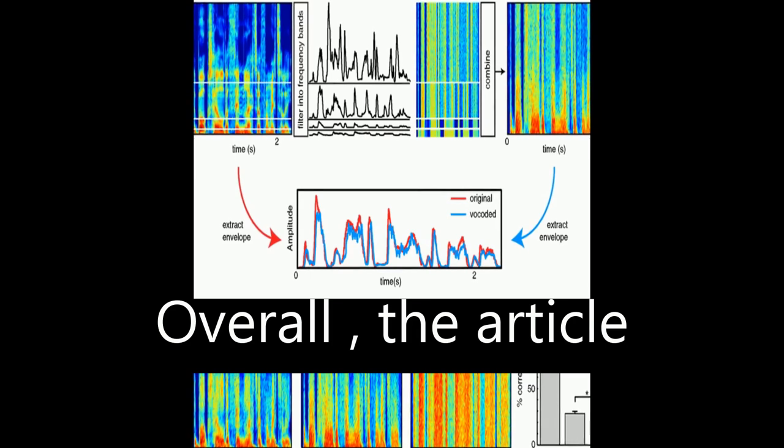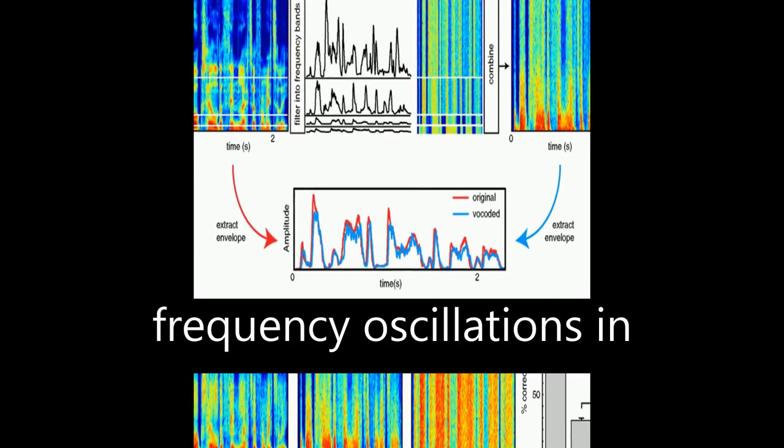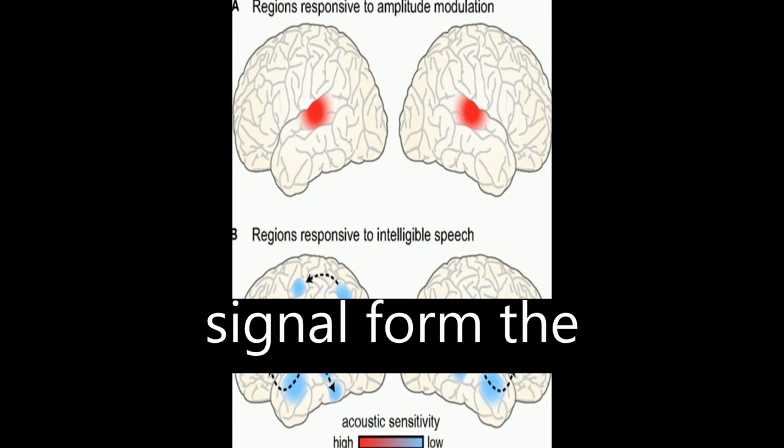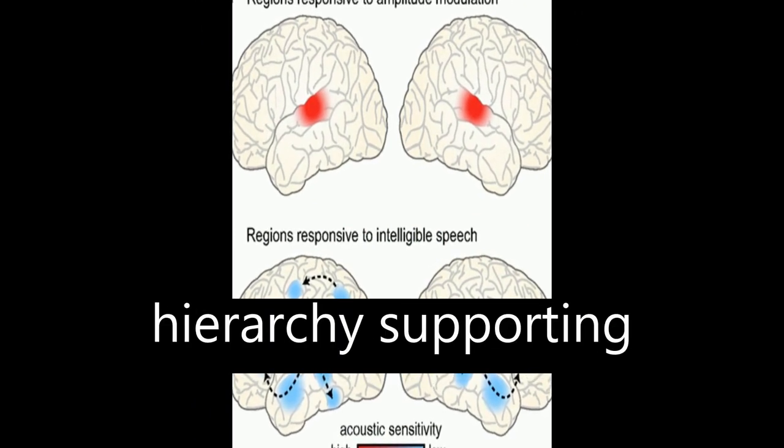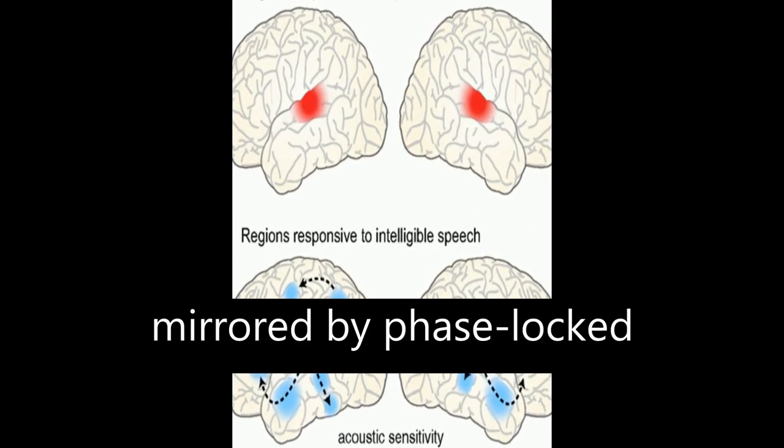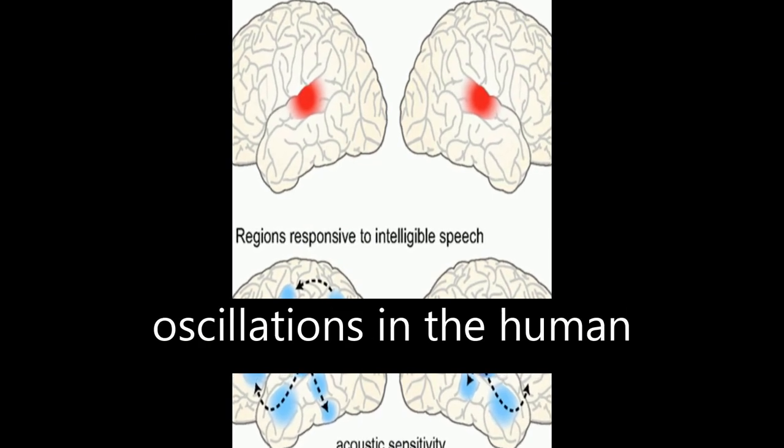Overall, the article suggests that low-frequency oscillations in the acoustic speech signal form the foundation of a rhythmic hierarchy supporting spoken language, mirrored by phase-locked oscillations in the human brain.